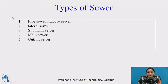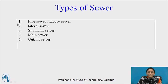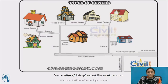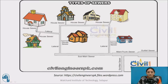There are the following types of sewer lines: pipe sewer, which is also called a house sewer; lateral sewer; sub-main sewer; main sewer; and outfall sewer. In this diagram, all the types of sewer are shown. The house sewer is directly connected to the house and carries the sewage away from the building.